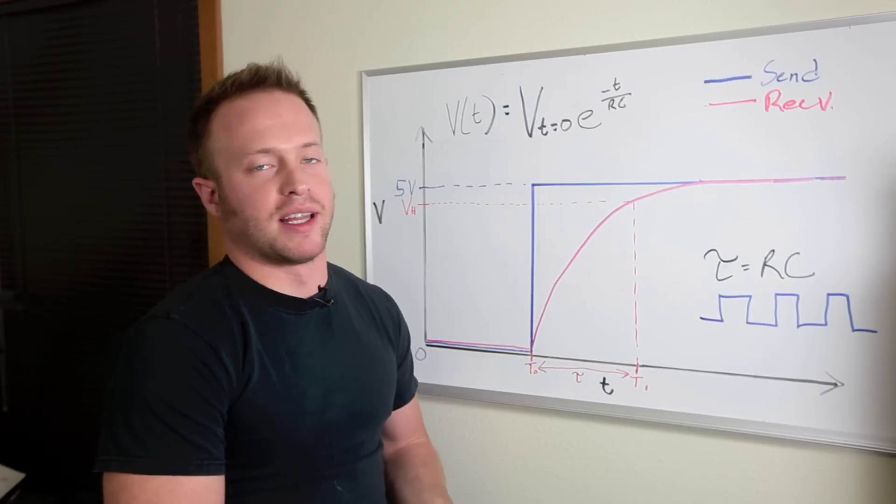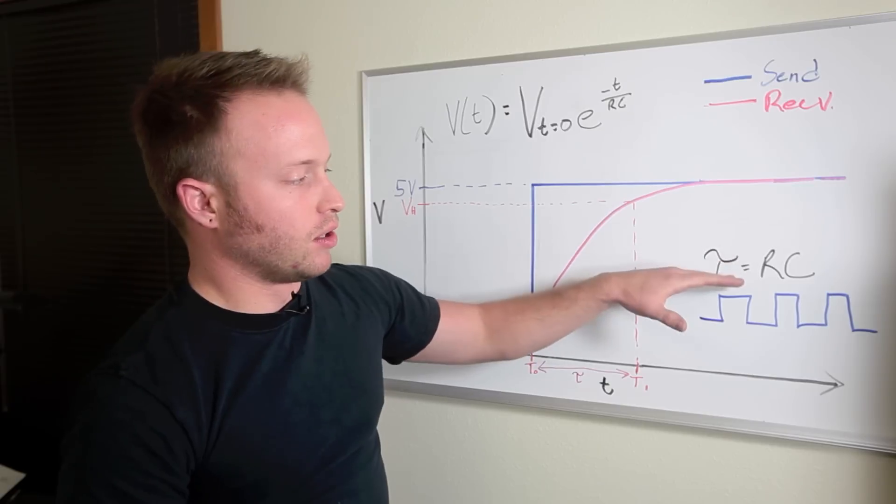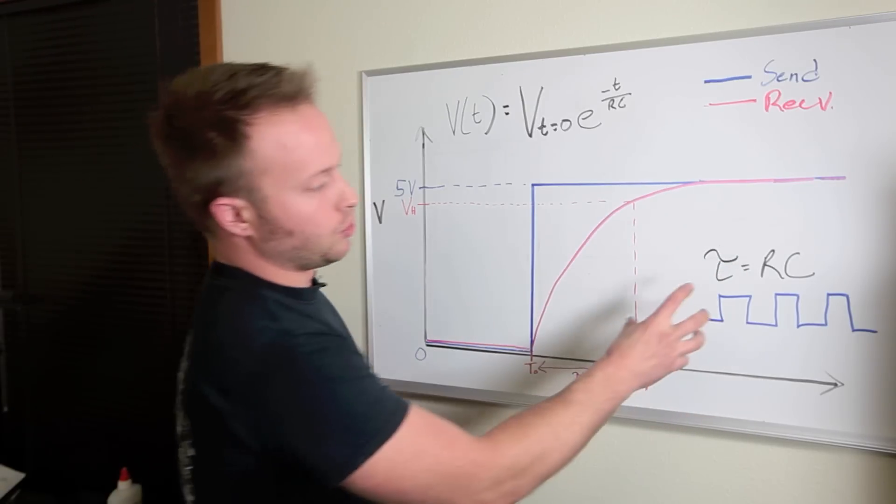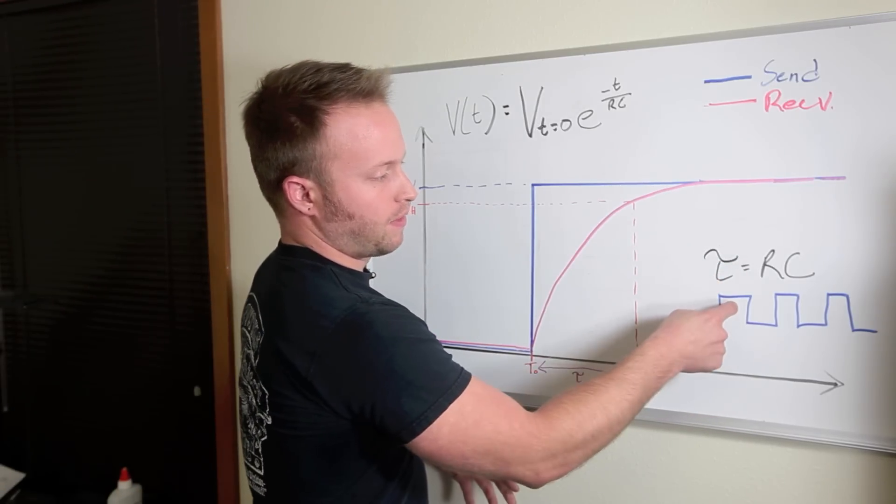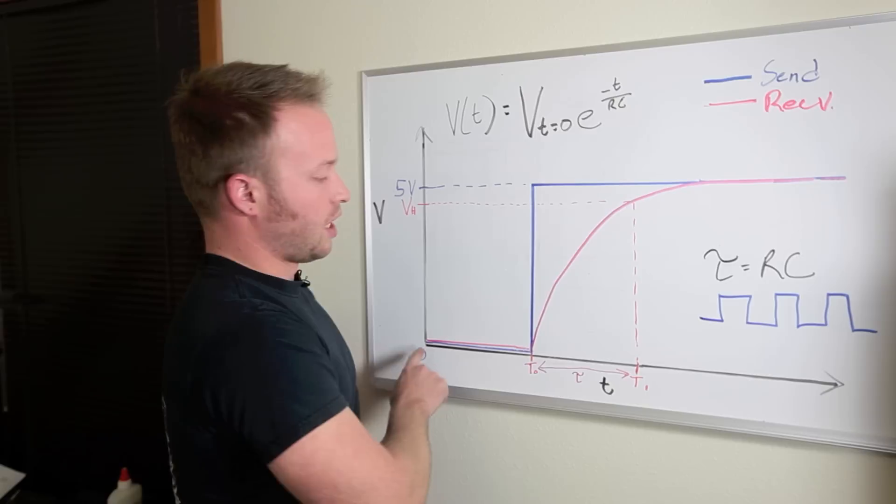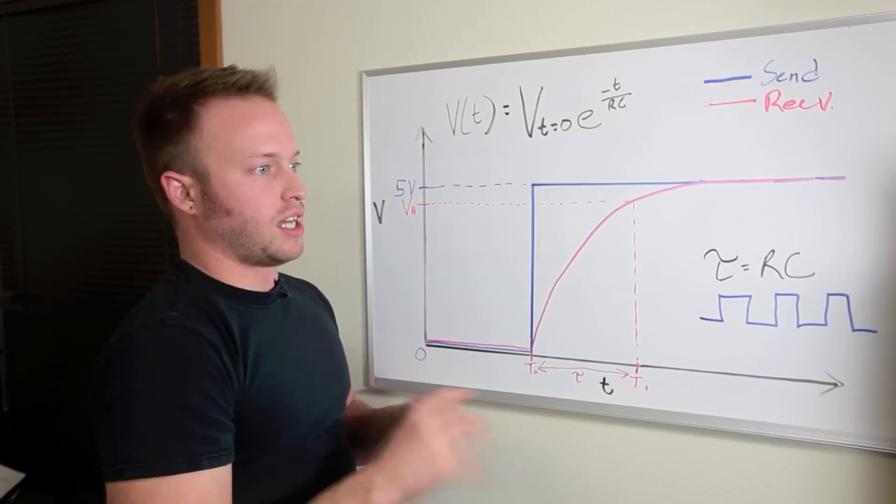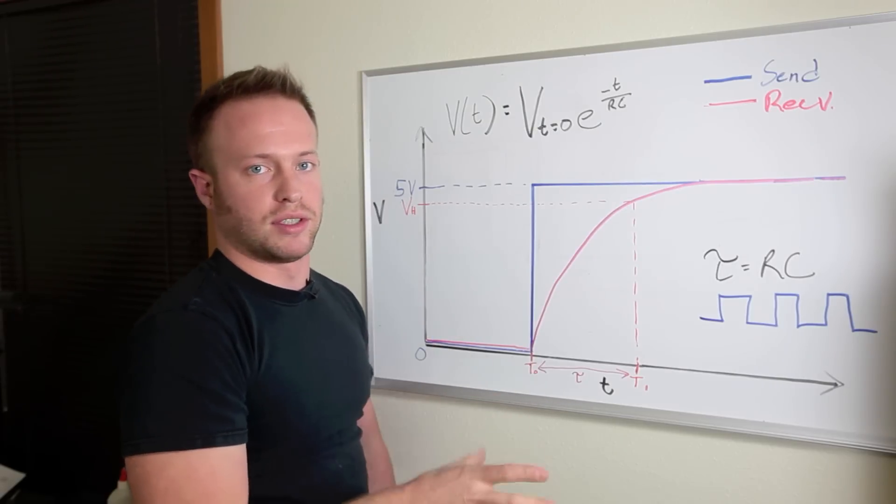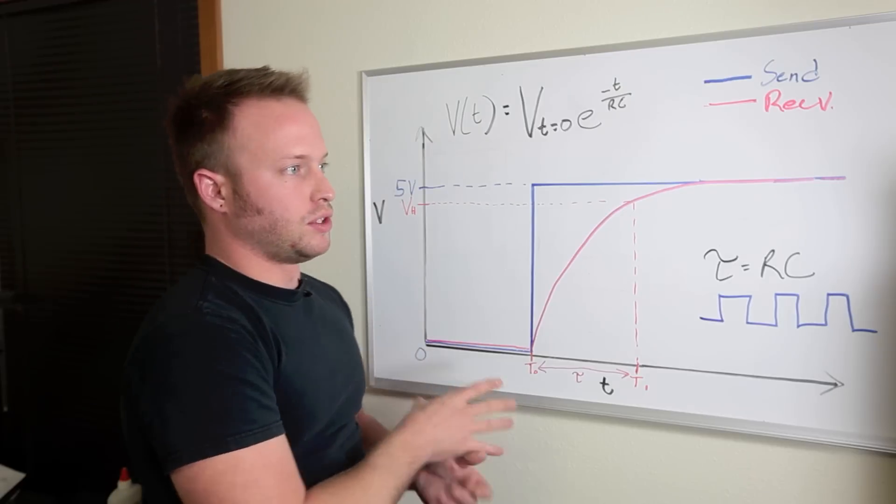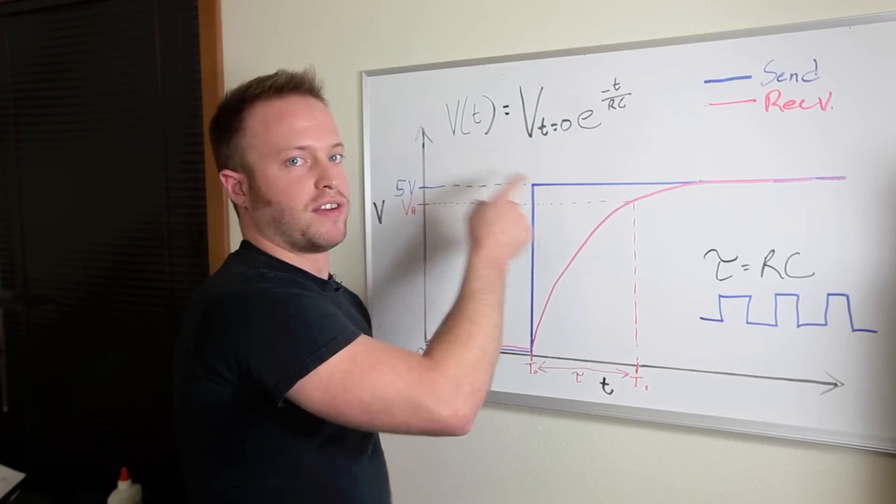If you were to look at the waveform created by the send pin on an oscilloscope, it would look like this: five volts back down to zero, five volts back down to zero really quickly. So if you zoom in to one of the five volt changes on this waveform, it looks like this. So this blue line represents a change in our send pin. It is sending the voltage on that resistor and the capacitor to five volts. But the voltage across the resistor and the capacitor does not immediately go to five volts.